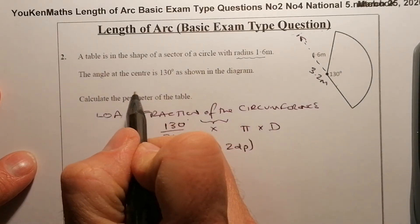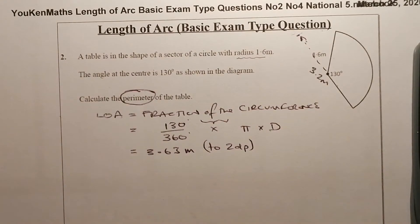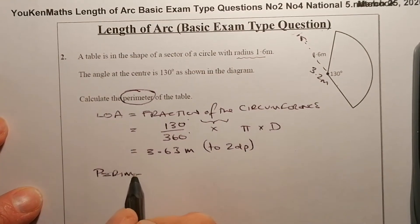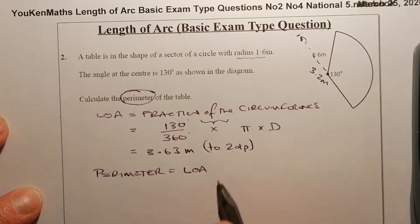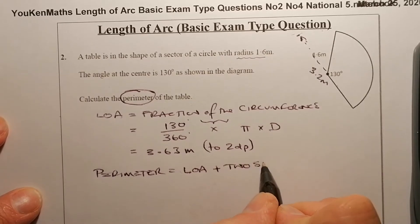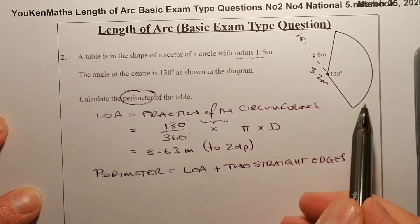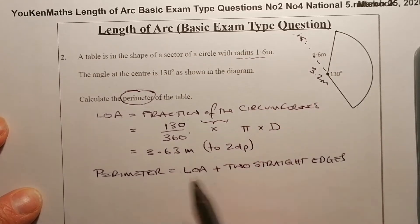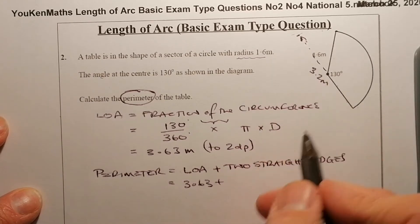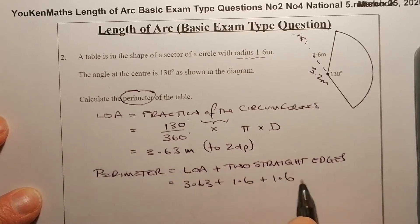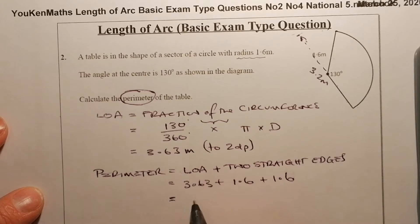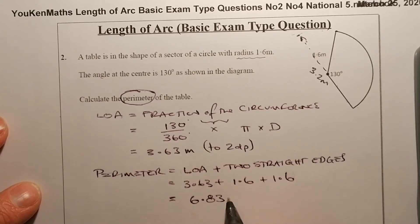The question was asking about the perimeter of the table. The perimeter is going to be equal to the length of the arc we've just calculated, plus the two straight edges — this edge and that edge — which gives the full perimeter of the table. So that's 3.63 plus 1.6 plus another 1.6, giving 6.83 meters to two decimal places. That's our final answer.